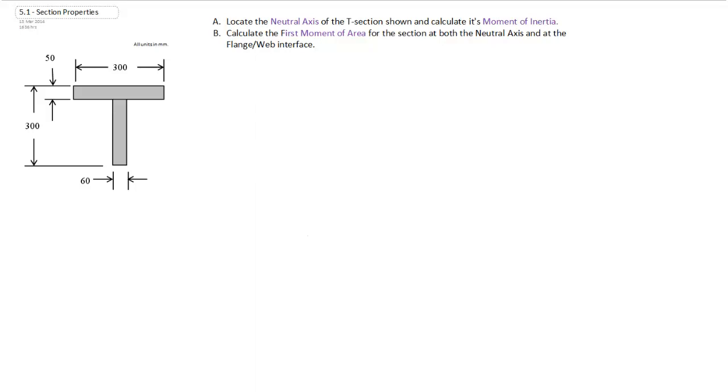So we'll start by locating the neutral axis. Of course we know that the neutral axis goes through the centroid of the cross-section. We have a composite cross-section,